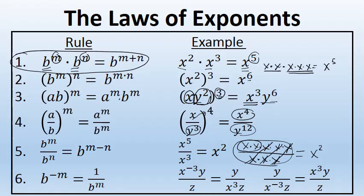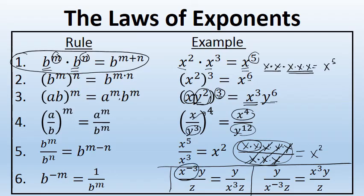The sixth law of exponents: b to the power of negative m. When you raise a base to a negative power, it goes to the bottom of a fraction. So b to the negative n power is equal to 1 over b to the positive m. For example, x to the negative 3 times y over z — the x has a negative exponent, so it goes to the bottom of the fraction bar, and we write it as x to the positive 3 power. x to the negative third times y all over z equals y over x to the third z. The x moved to the bottom because it had a negative exponent. The factor of y and the factor of z are unchanged because they do not have a negative exponent.